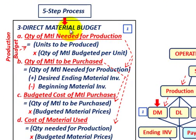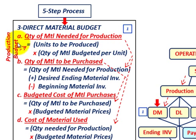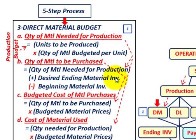When dealing with the direct materials budget, we go through a five-step process. For step A, we determine the quantity of material needed for production — that comes from the production budget, which comes from the sales budget. You take the units to be produced times the quantity of material budgeted on a per-unit basis. For step B, the quantity of material to be purchased equals the quantity needed for production, plus the desired ending material inventory, minus the beginning material inventory.